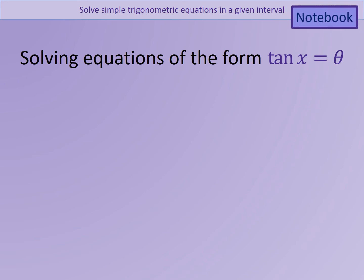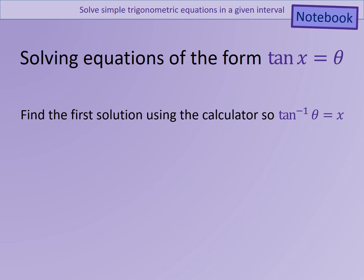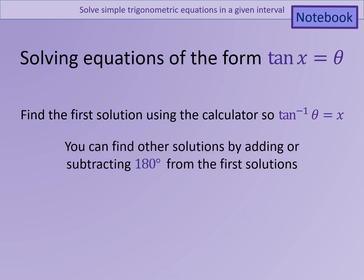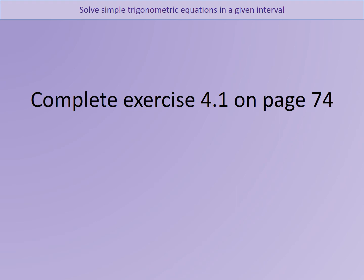These rules can all be written down in your notebooks. The third type of equation involves solving tan x equals theta. Find the first solution — the principal value — by doing inverse tan of theta. Then, unlike sine and cosine, you don't need a separate second-solution formula; simply add or subtract 180 degrees as many times as needed. To practise, go to page 74, exercise 4.1, and check answers in the back of the book.